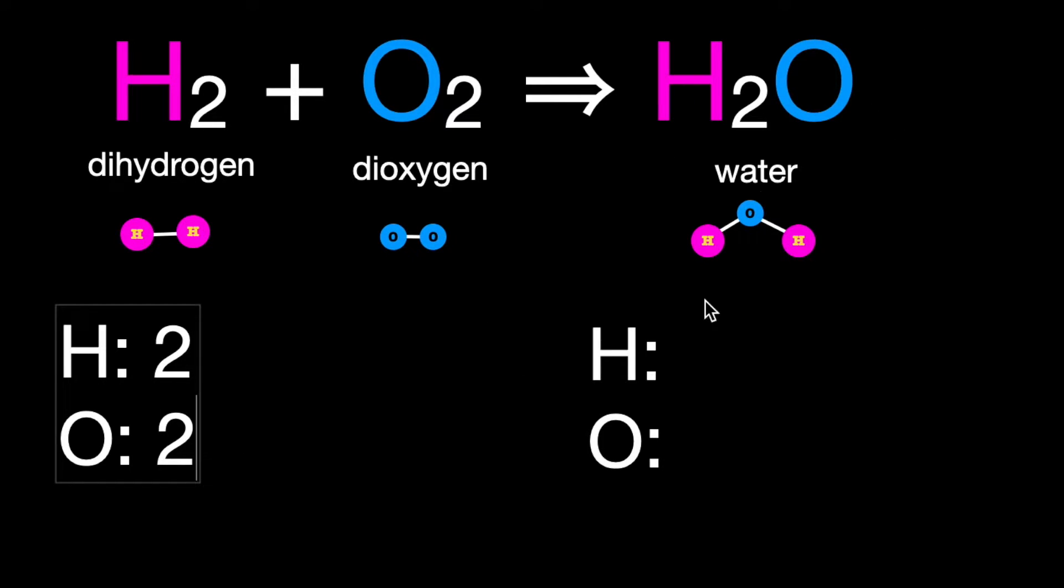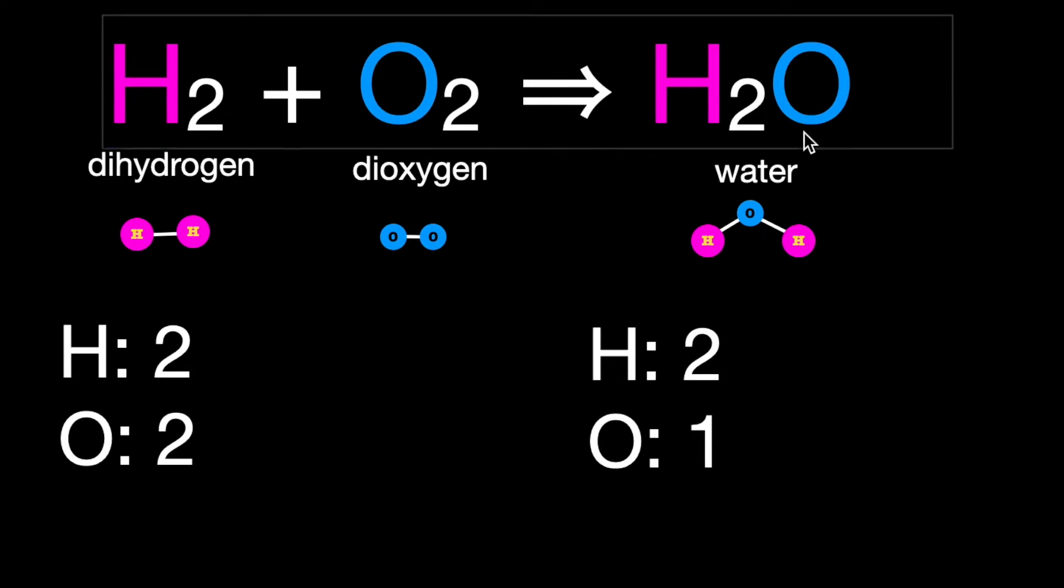And on the water side, the yield side, we have two hydrogen, but only one oxygen. At this point, we need to see what we can do to this right side of the equation to help us balance out those oxygens.